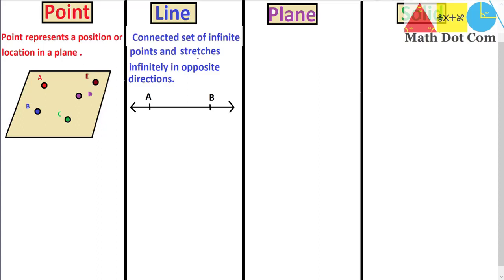A line stretches infinitely in both directions, as shown in the diagram, and it has no end point. Keep this in mind — don't confuse it with the line segment. A line segment is basically a finite part of a line, while a line itself is infinite. It extends indefinitely in the opposite direction. A line can be represented as line A, line B, line C, or it can also be written as AB with a double-headed arrow on both sides, just like the shape of the line.